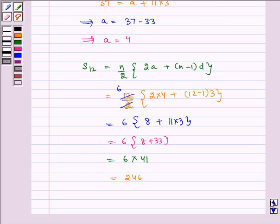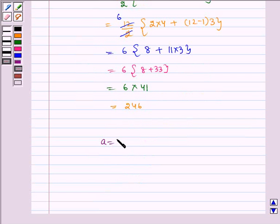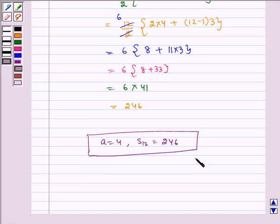Hence, A is equal to 4 and S12 is equal to 246, our required answer. I hope you understood the question. Bye and have a nice day.